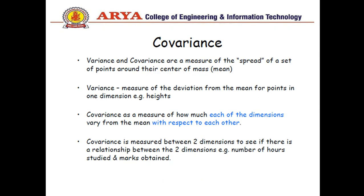To solve PCA problems, first of all we should know about the covariance matrix. So what is covariance? Variance and covariance are a measure of the spread of a set of points around the center of mass, that is mean.